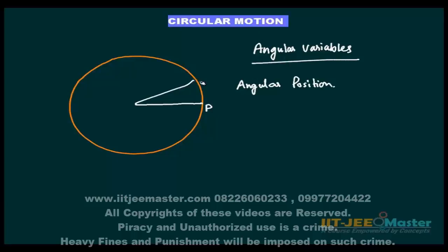If the particle moves on the circumference and reaches a position P' from the position P', this angle, the angle made by the P' arc on the centre of the circle is theta. This angle is now known as angular position.